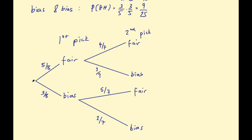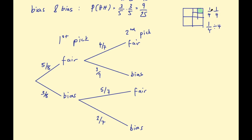Now I want to find the probabilities of each branch by multiplying along the branches. To explain why we multiply: think of a square split into quarters — if you split one of those quarters into quarters again and shade one piece green, that green piece is a quarter of a quarter. A quarter times a quarter equals one-sixteenth, so that green piece is one-sixteenth of the total square. That's why we multiply along branches — it's a fraction of a fraction.